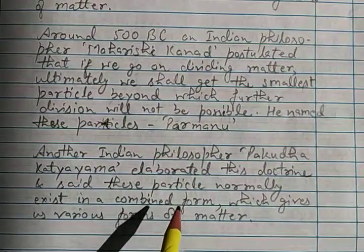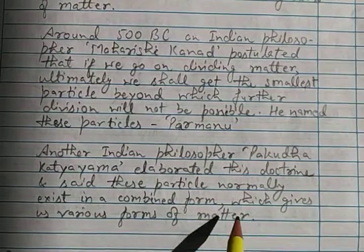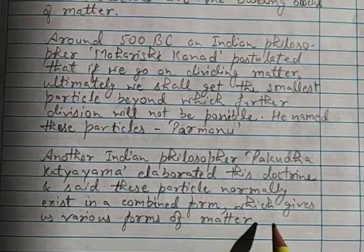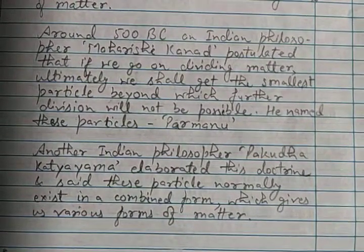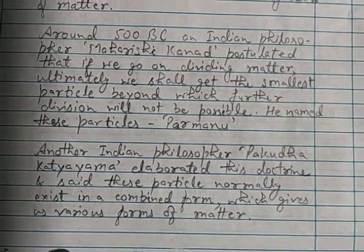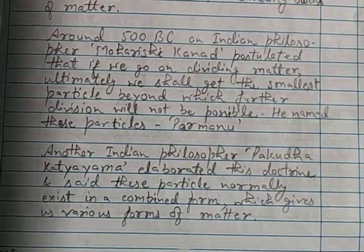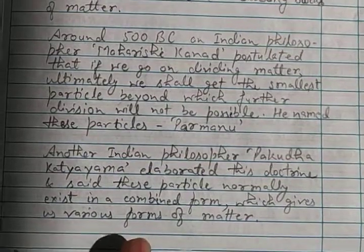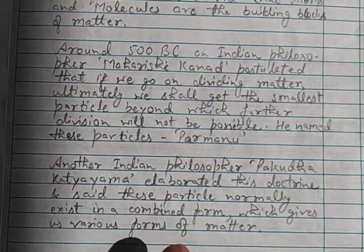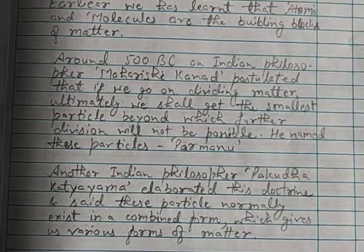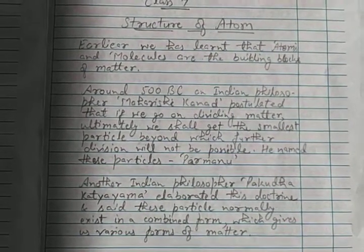They exist in the form of molecules like O2 gas, hydrogen gas, and so on. So he said they only exist in combined form, which gives us various forms of matter. For example, oxygen gas is matter made by the combination of two atoms of oxygen in one molecule, and many molecules form the gas. This was the earliest conception about the structure of atom.